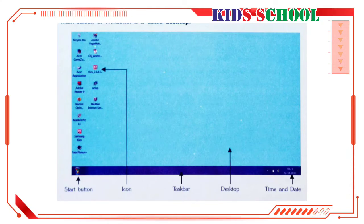Starting Windows: when you switch on the computer, Windows starts automatically. You will see the main screen of Windows, which is called the desktop. The small pictures that you see on the desktop are called icons. Each icon represents a program in Windows. However, depending on how your computer is set up, the icons on the desktop might be different from those in the illustration.